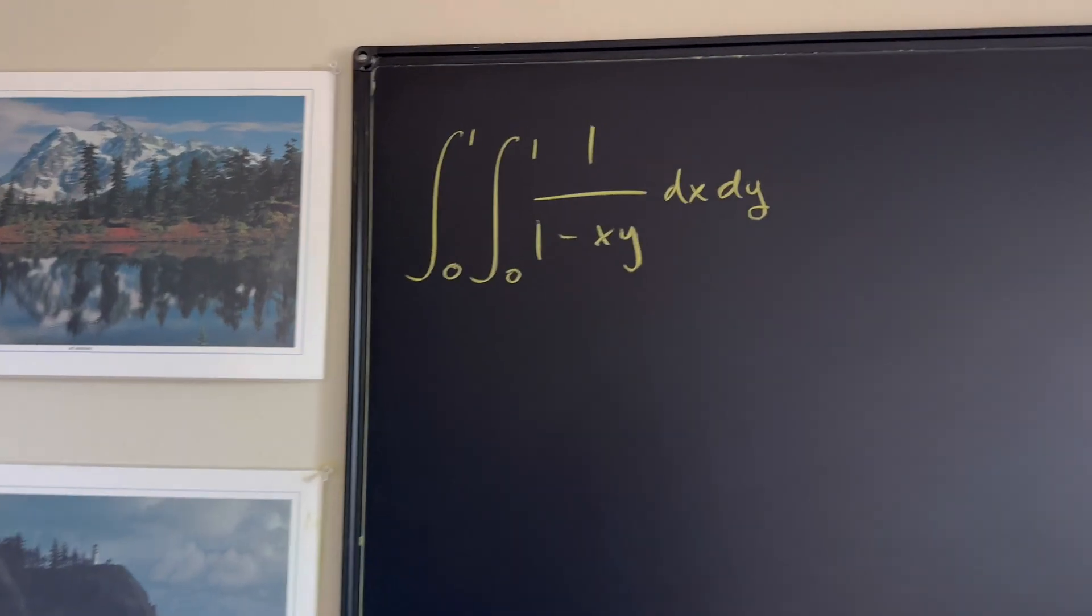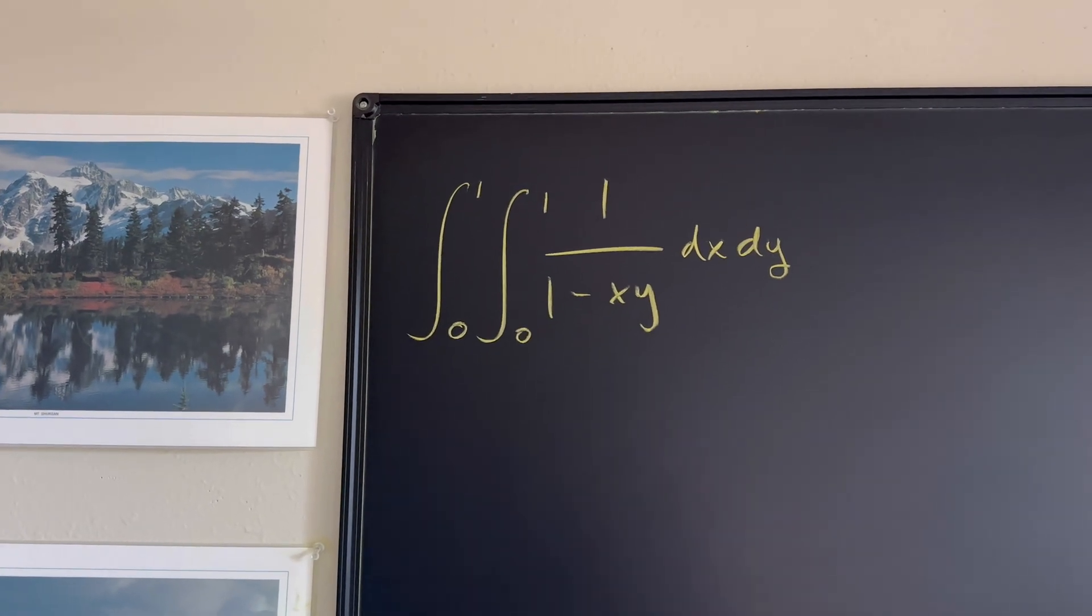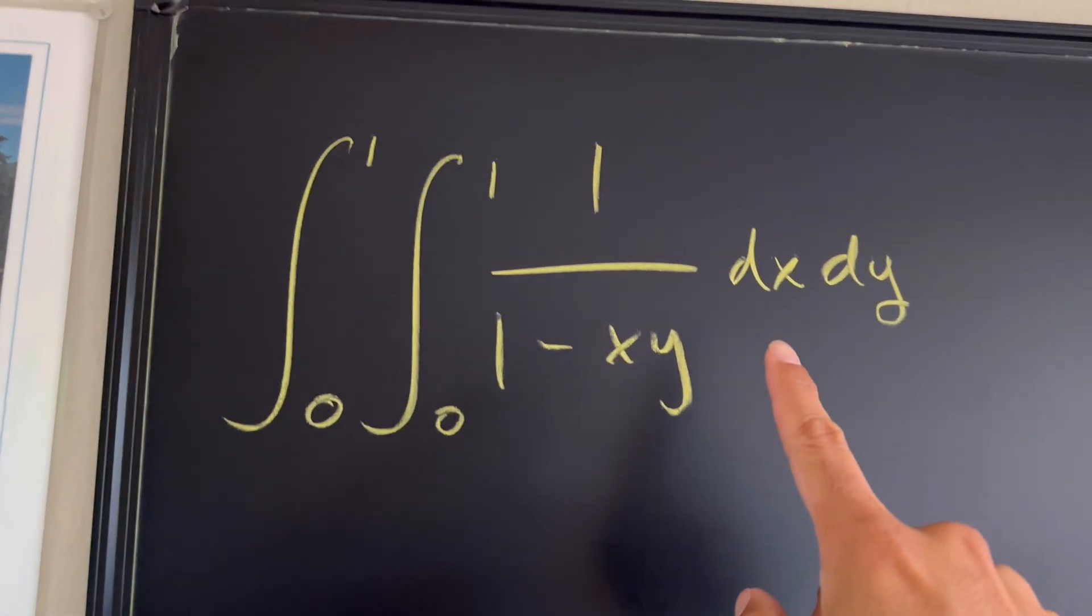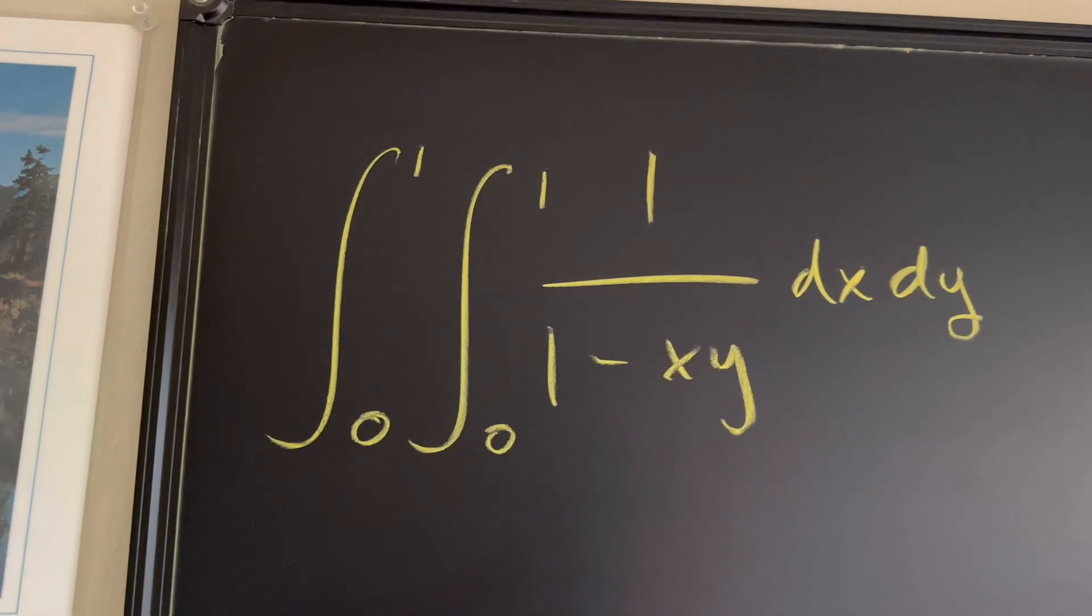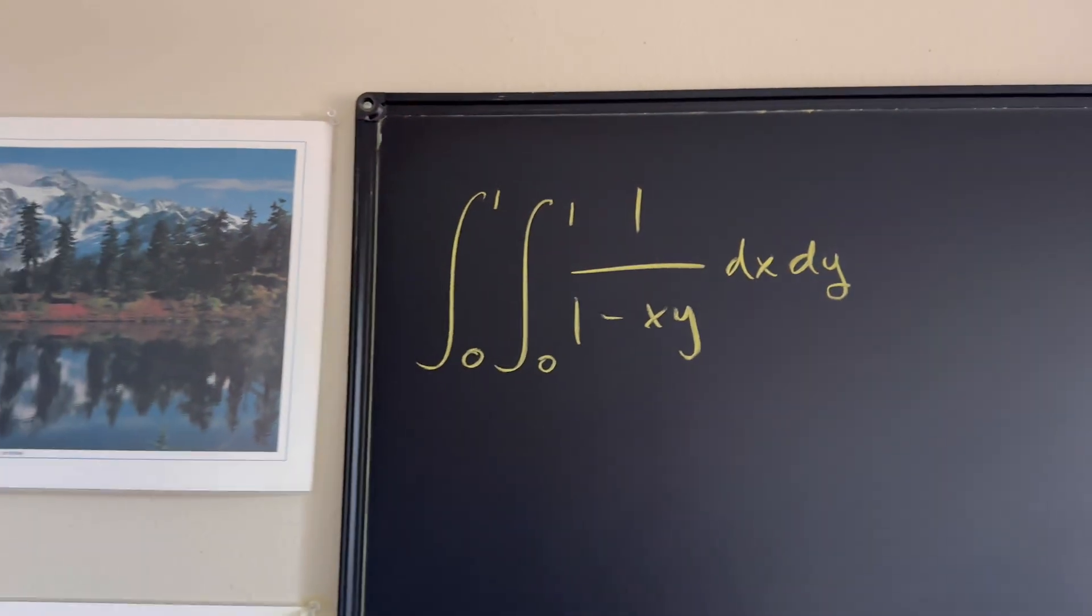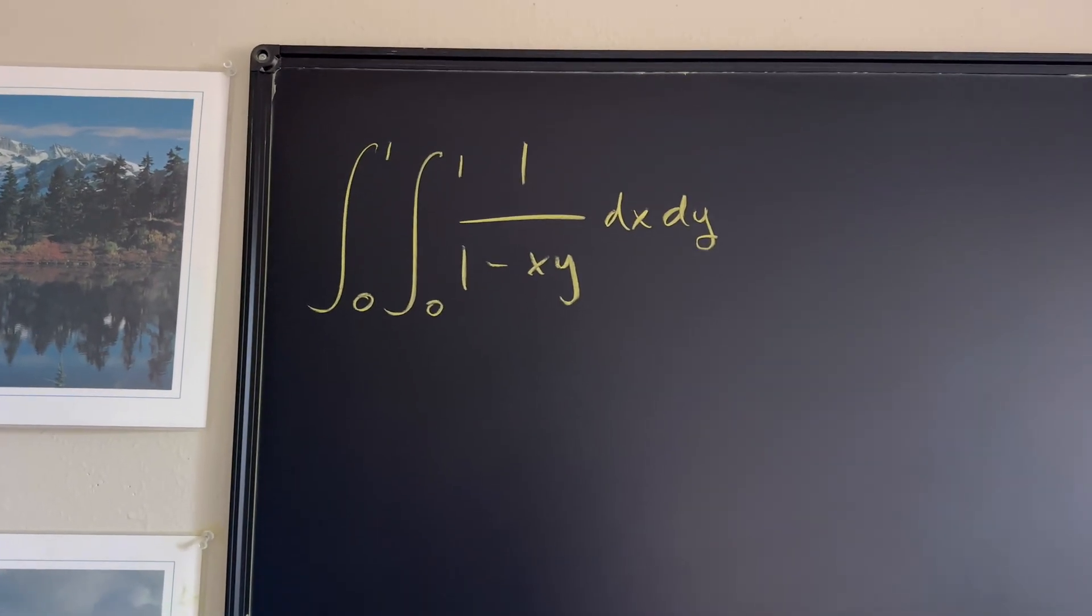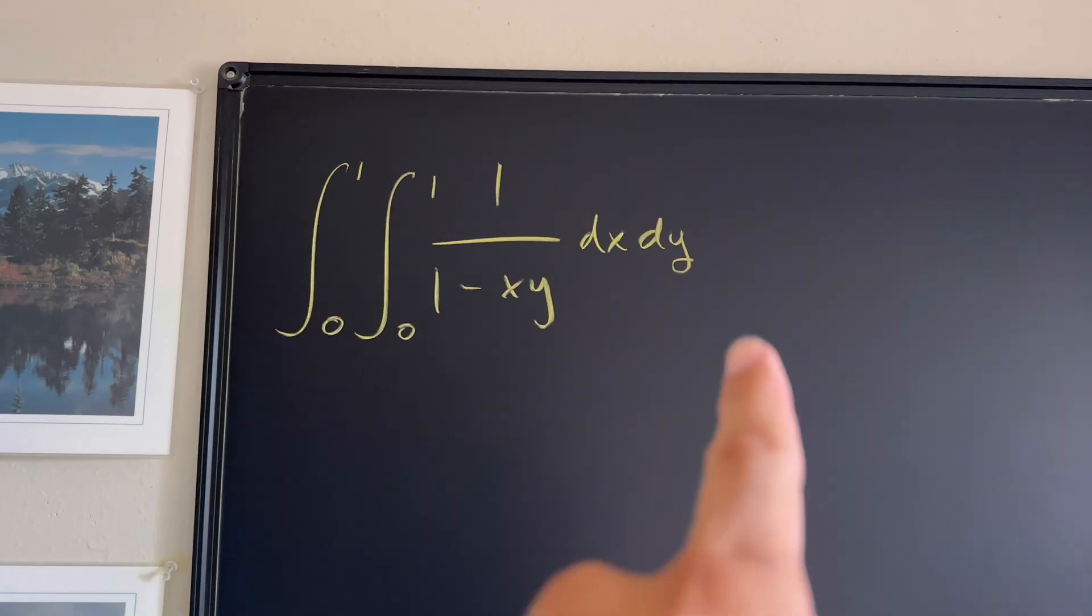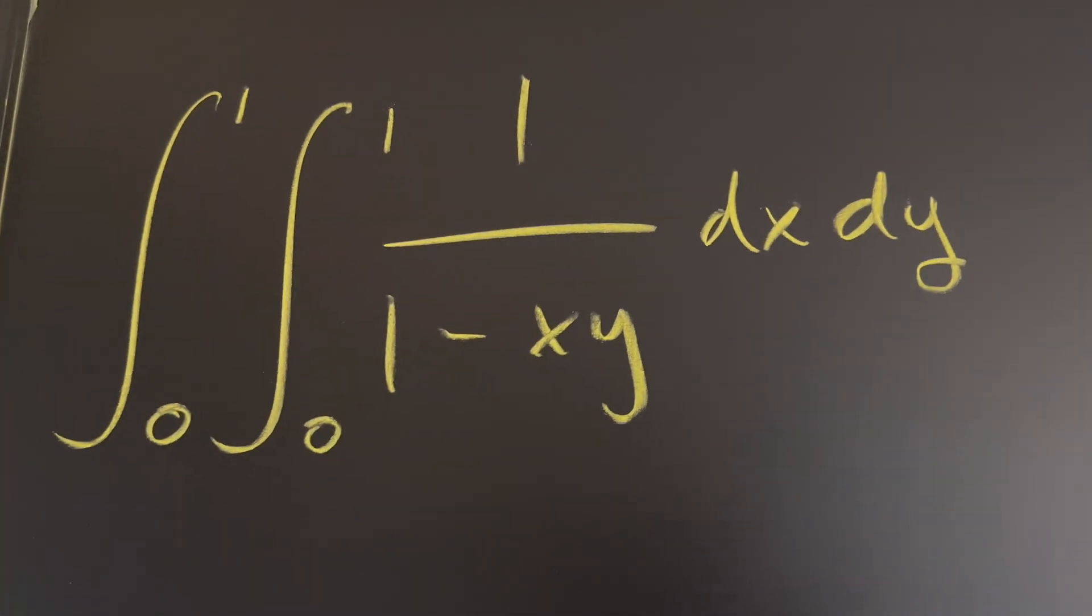Now at this point, I'm just hoping that if you have not taken a Calculus 3 class, you can sort of follow along and just understand that because we're integrating with respect to x initially, we're going to treat our y variable like a constant. So just imagine not necessarily that it doesn't exist, but we're not going to treat it like the variable that it is until we integrate with respect to y.